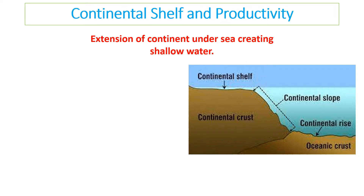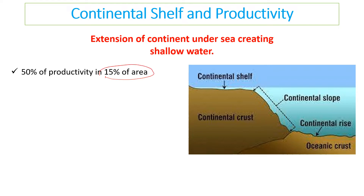This links directly to the continental shelf, which is an extension of the continent underneath the sea, creating a layer of shallow water. This productivity means that 50% of ocean productivity occurs in only 15% of the area of the oceans — effectively the continental shelves.